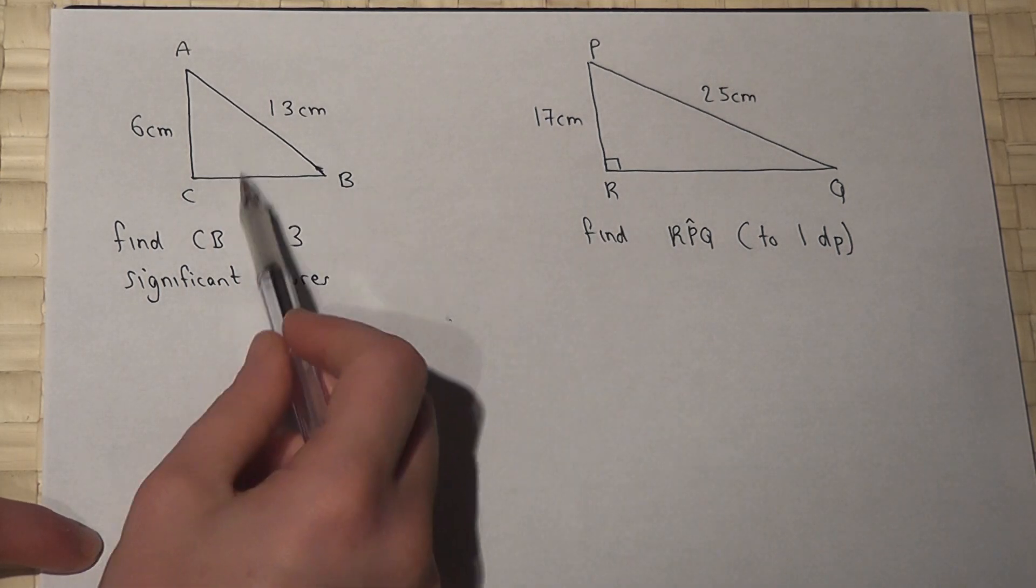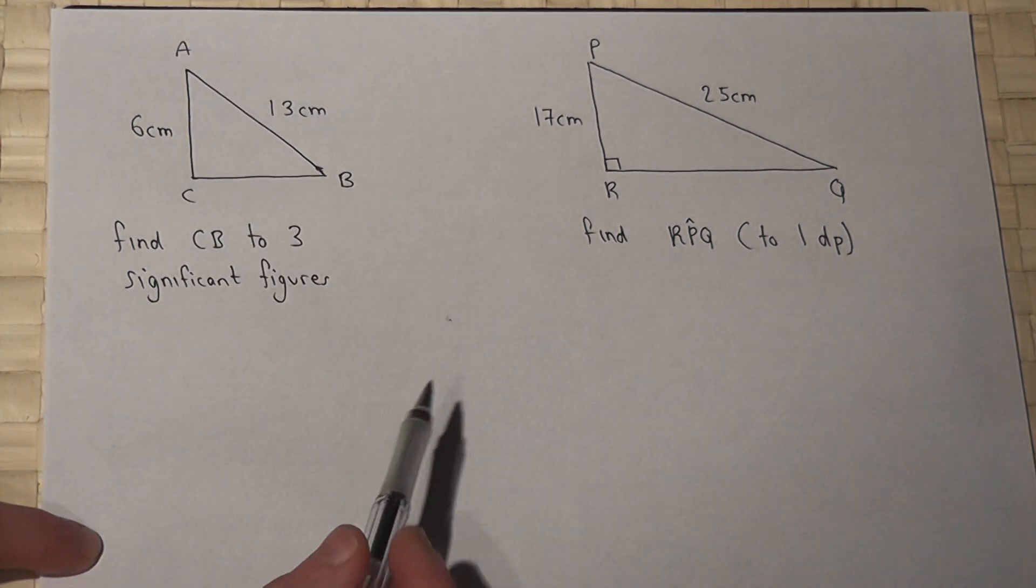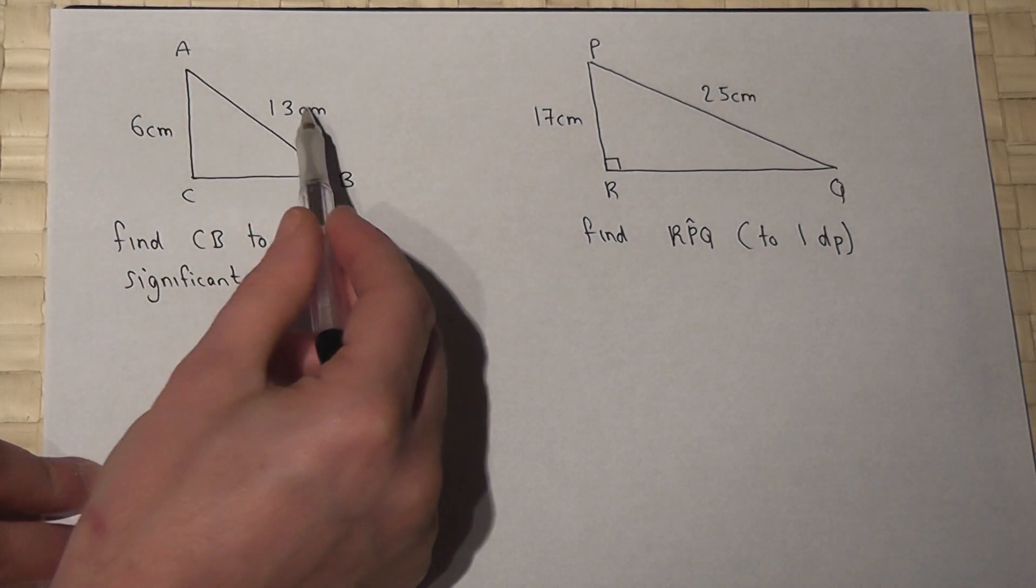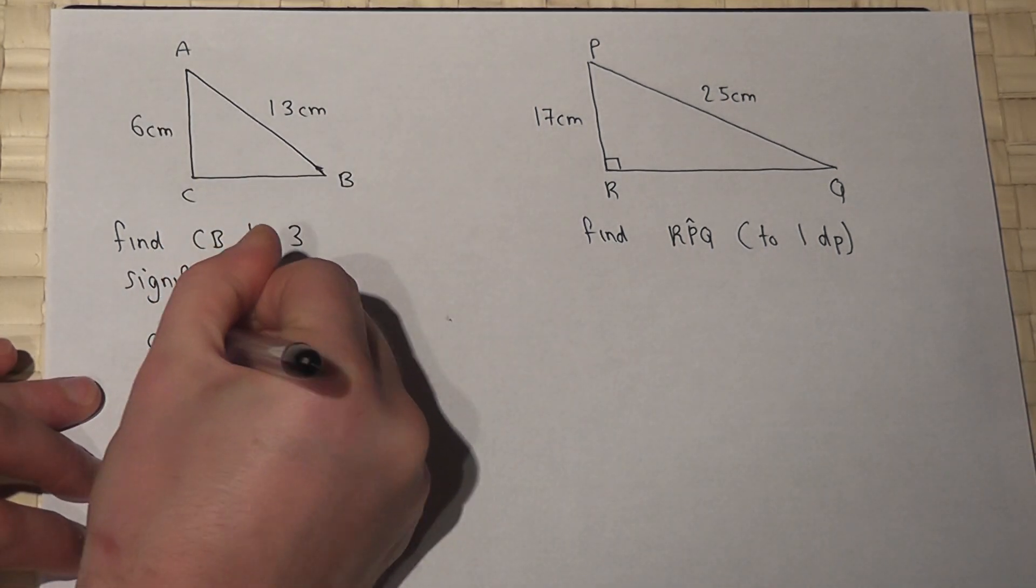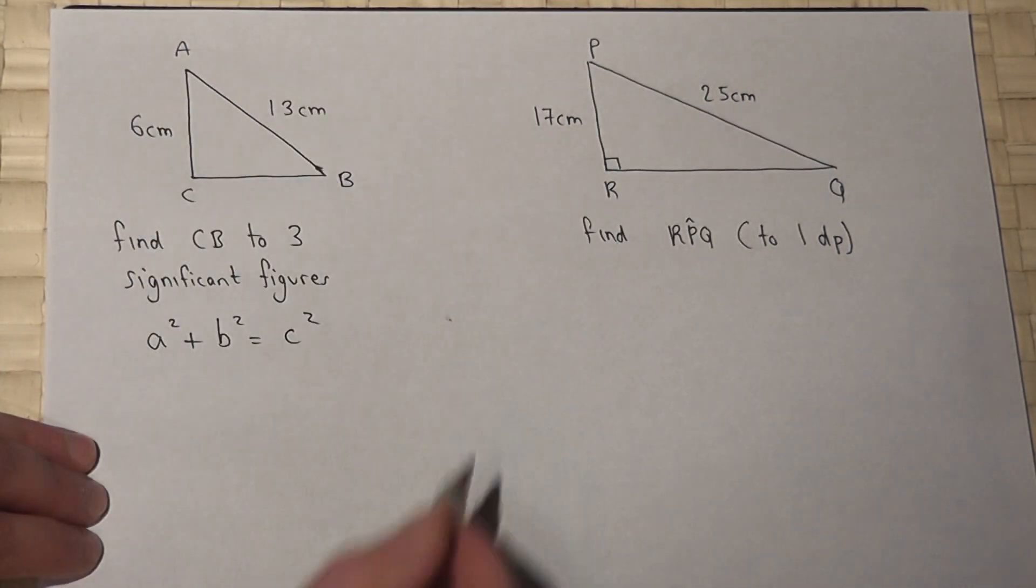Now the first one we're asked to find the length CB. Pythagoras links three sides in a right-angled triangle and Pythagoras says that a squared plus b squared equals c squared, where c is always the hypotenuse.